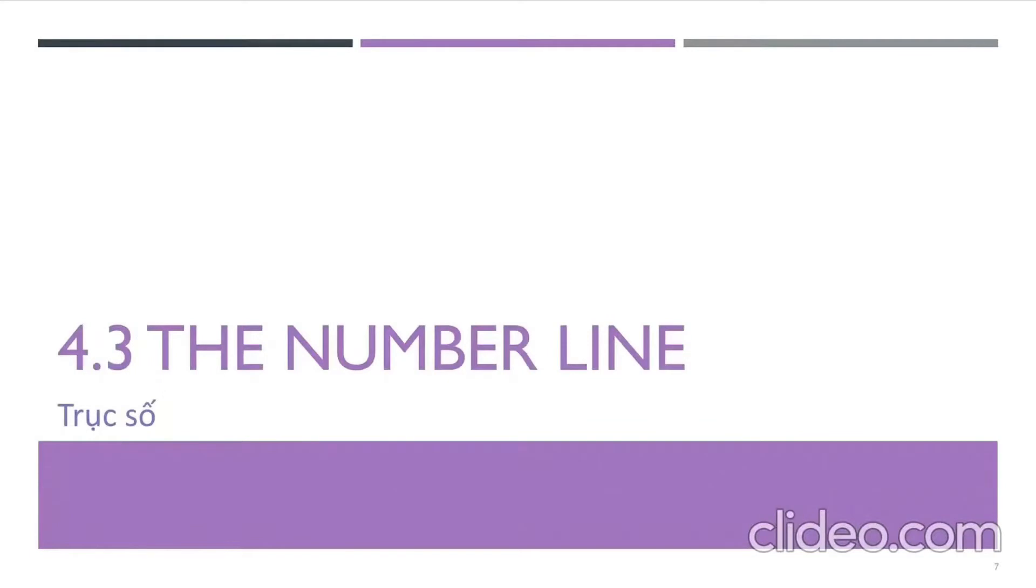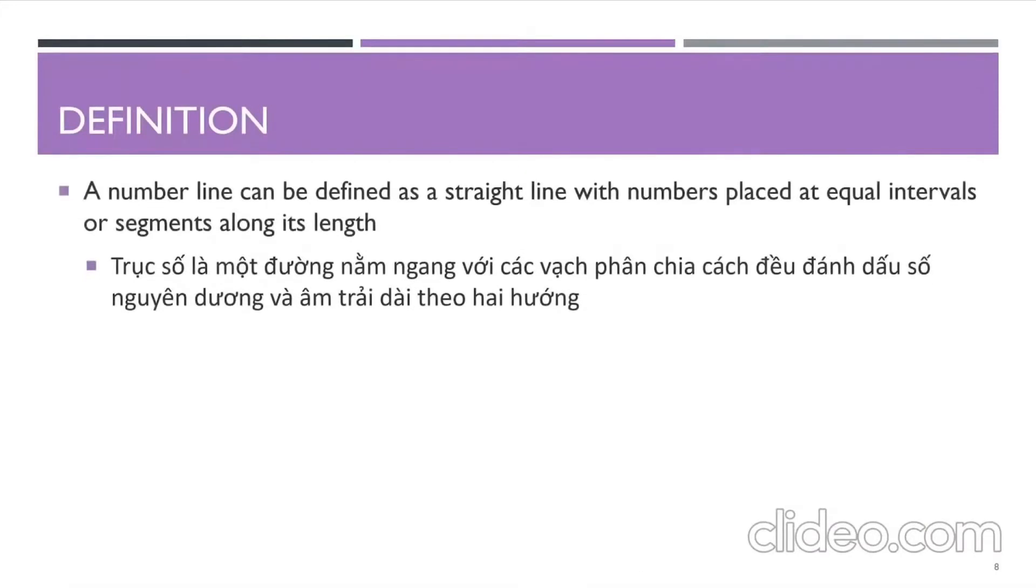Okay, so next up we have the number line. First definition: A number line can be defined as a straight line with numbers placed at equal intervals or segments along its length.